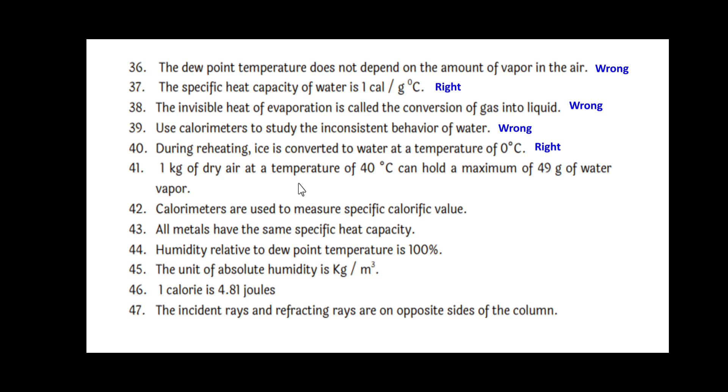One kg of dry air at a temperature of 40 degree celsius can hold a maximum of 49 grams of water vapor. Right. Calorimeter is used to measure the specific calorific value. Right. All metals have the same specific heat capacity. Wrong. Humidity relative to dew point temperature is 100 percent. Right. The unit of absolute humidity is kg per meter cube. Right. One calorie is 4.81 joules. Wrong.